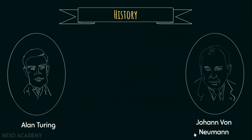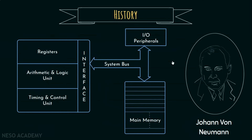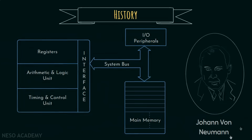Alright, enough with the history for now. Let's get to know about why we are so much interested in this marvelous character, John von Neumann. You remember this typical block diagram of a computer from our previous session, right? Well, this is the person behind it. This architecture is named after him and known as von Neumann architecture.